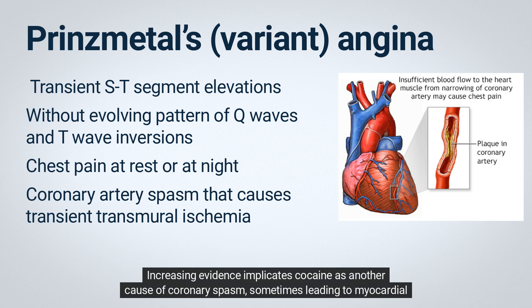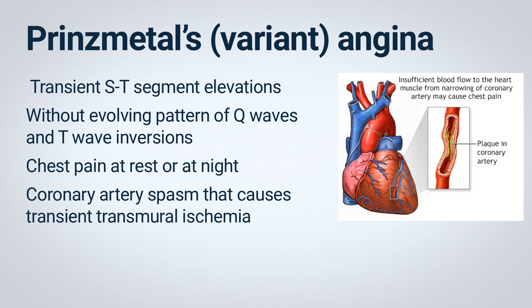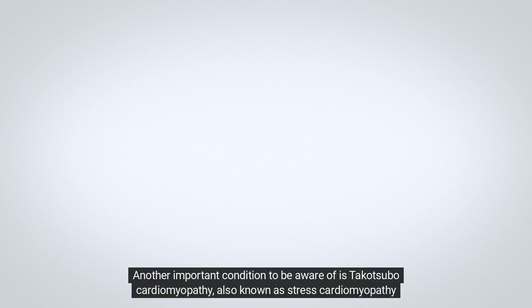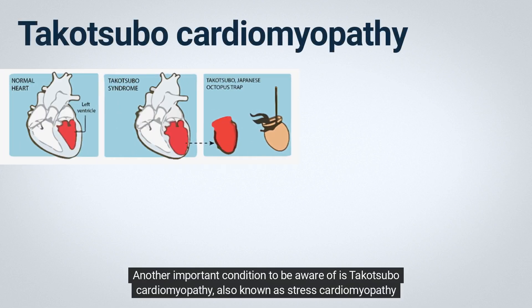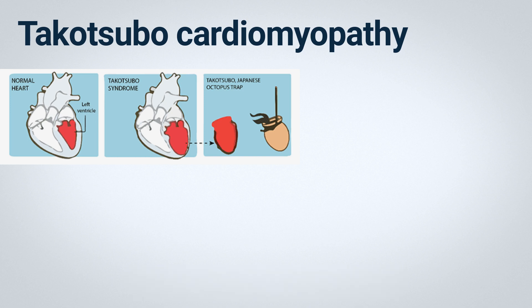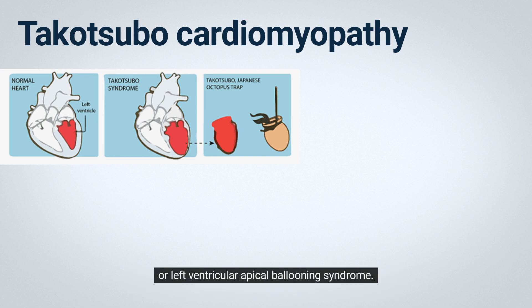In most cases, spasm is associated with high-grade coronary obstruction. Increasing evidence implicates cocaine as another cause of coronary spasm, sometimes leading to myocardial infarction. Another important condition to be aware of is Takotsubo cardiomyopathy, also known as stress cardiomyopathy or left ventricular apical ballooning syndrome.